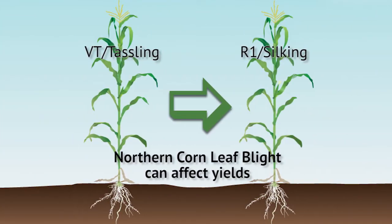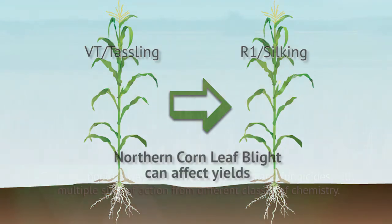Northern corn leaf blight can rob yields if it occurs during corn tasseling and silking development. In dry weather, the disease rarely occurs or does not spread enough to cause significant economic damage.